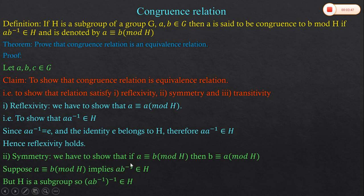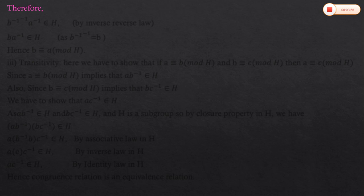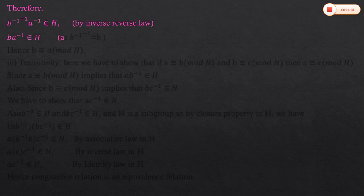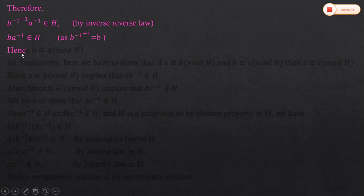Since a into b inverse belongs to H and H is a subgroup, the inverse of a into b inverse also belongs to H. By the inverse reversal law, b inverse's inverse into a inverse belongs to H. Since inverse of inverse is the original element, b inverse's inverse is simply b, therefore b into a inverse belongs to H. Hence b ≡ a (mod H).